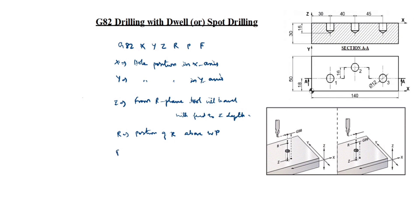P is dwell time or pass time when tool reaches at the bottom of hole, unit is milliseconds or seconds. F is feed rate mm per minute.